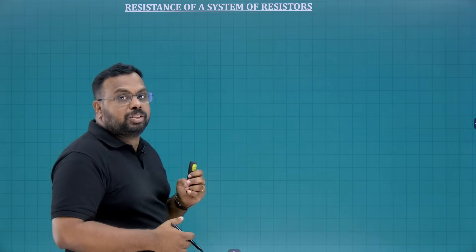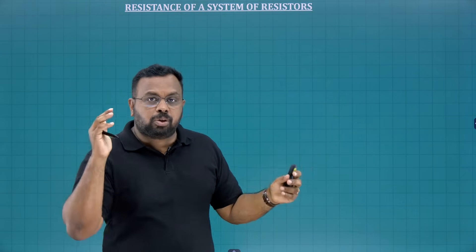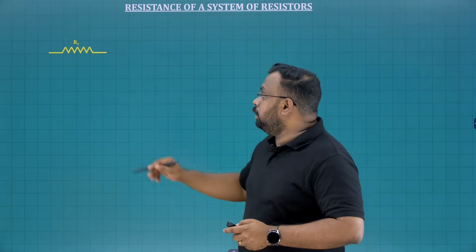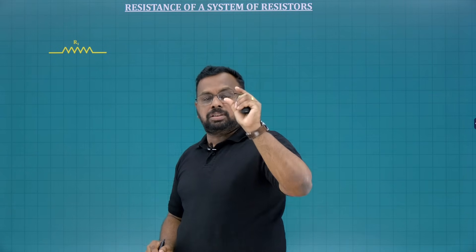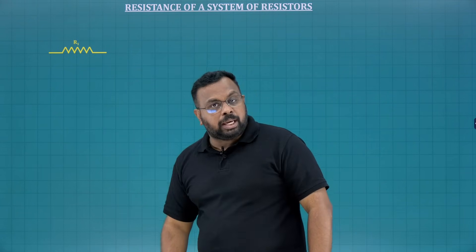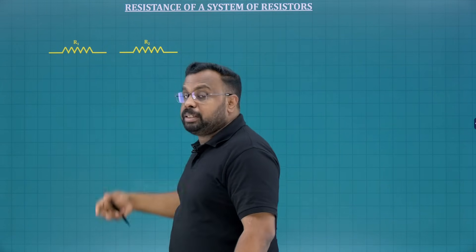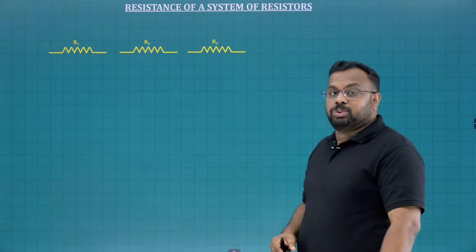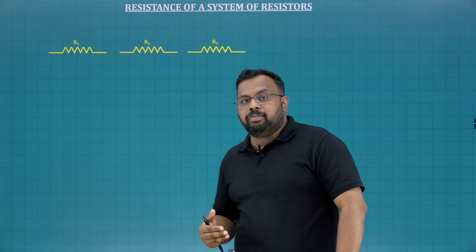Let us check the resistance of a system of resistors. System means there can be n number of resistors you can join. Do you remember the symbolic representation of a resistor? This is the symbolic representation of a resistor. This is our first resistor — its resistance value is R1. A resistor means it is a wire having a resistance R1, say for example 10 ohm. Now I am going to take one more resistor. Its resistance is R2 — it can be a similar value like 10 ohm, or it can be a different value, like this is 10 and this is 20. Now I am going to take one more. So total I have three resistors. We can combine hundreds of resistors — no issue. For our understanding, we are going to take three resistors.